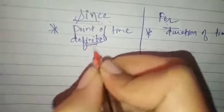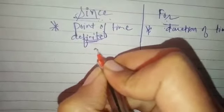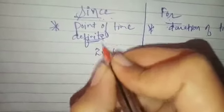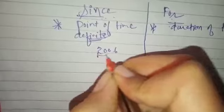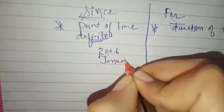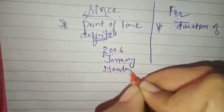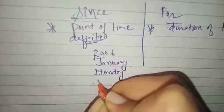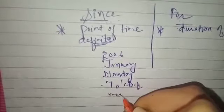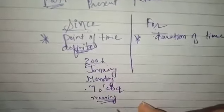For example, if any particular definite year is given like 2006, or definite month is given like January, day is given like Monday, proper time is given like 7 o'clock, morning, evening—these come in the category of definite time. Since will be used with these examples.